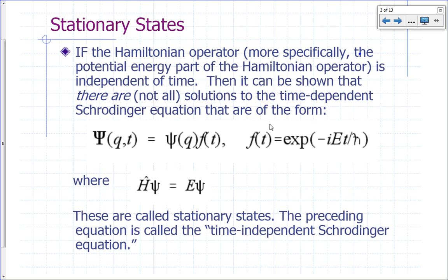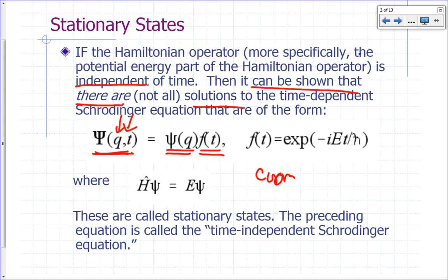If the Hamiltonian is independent of time, there are solutions to the Schrödinger equation that can be written in a separable form. A stationary state is defined as one where the wave function — a function of coordinates and time — can be written as a function of coordinates times a function of time. We say the coordinates and time are separable.